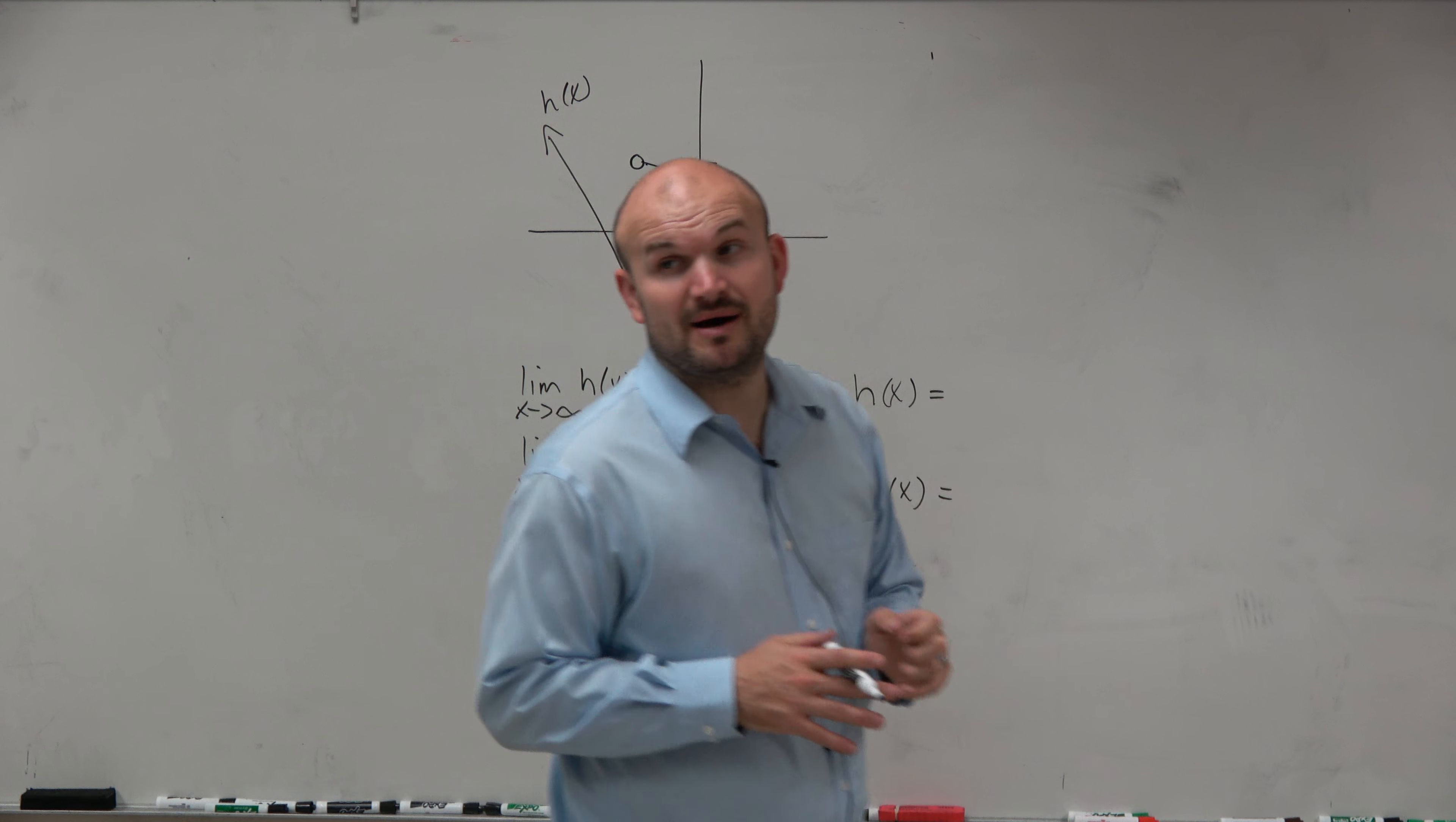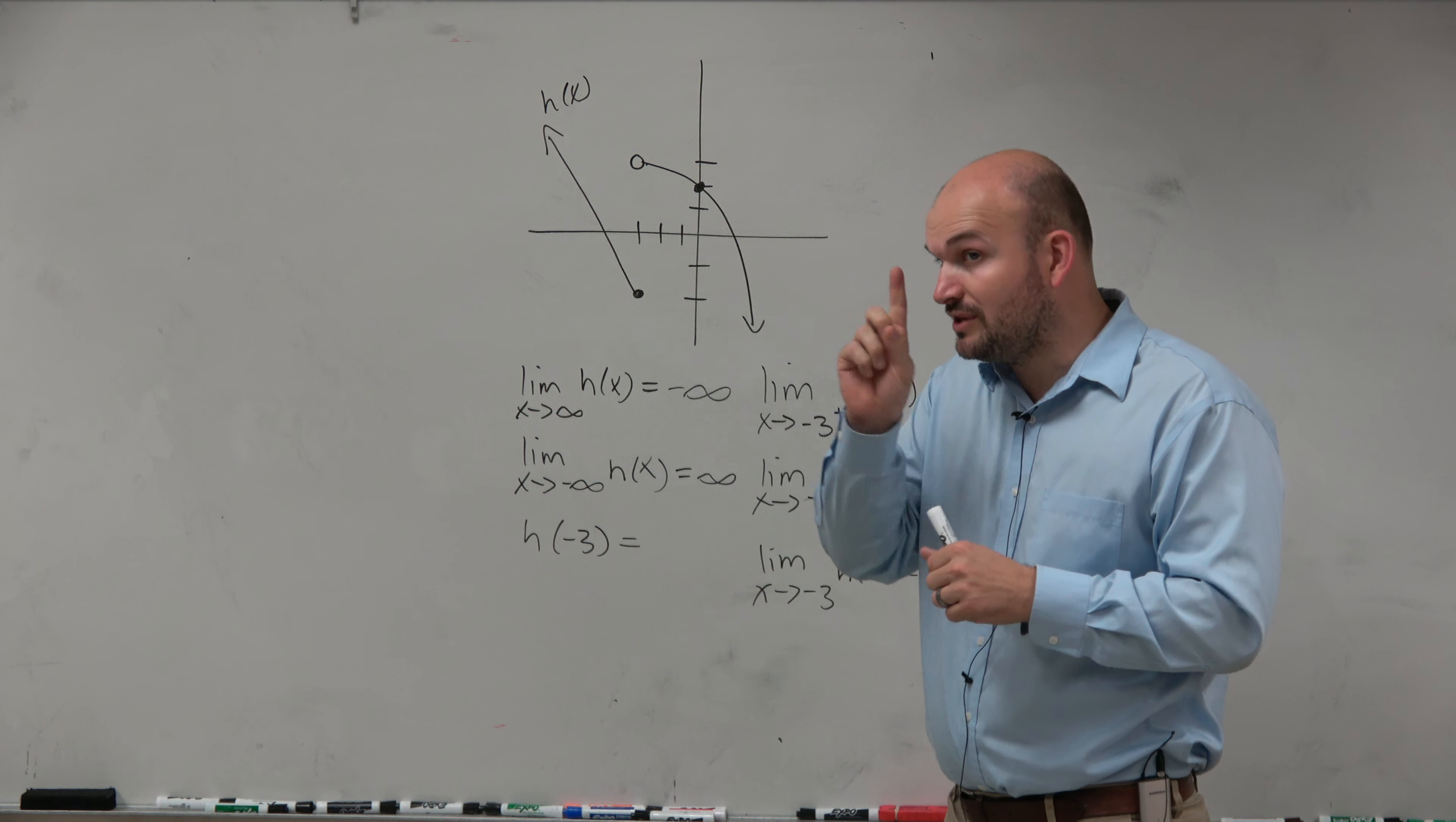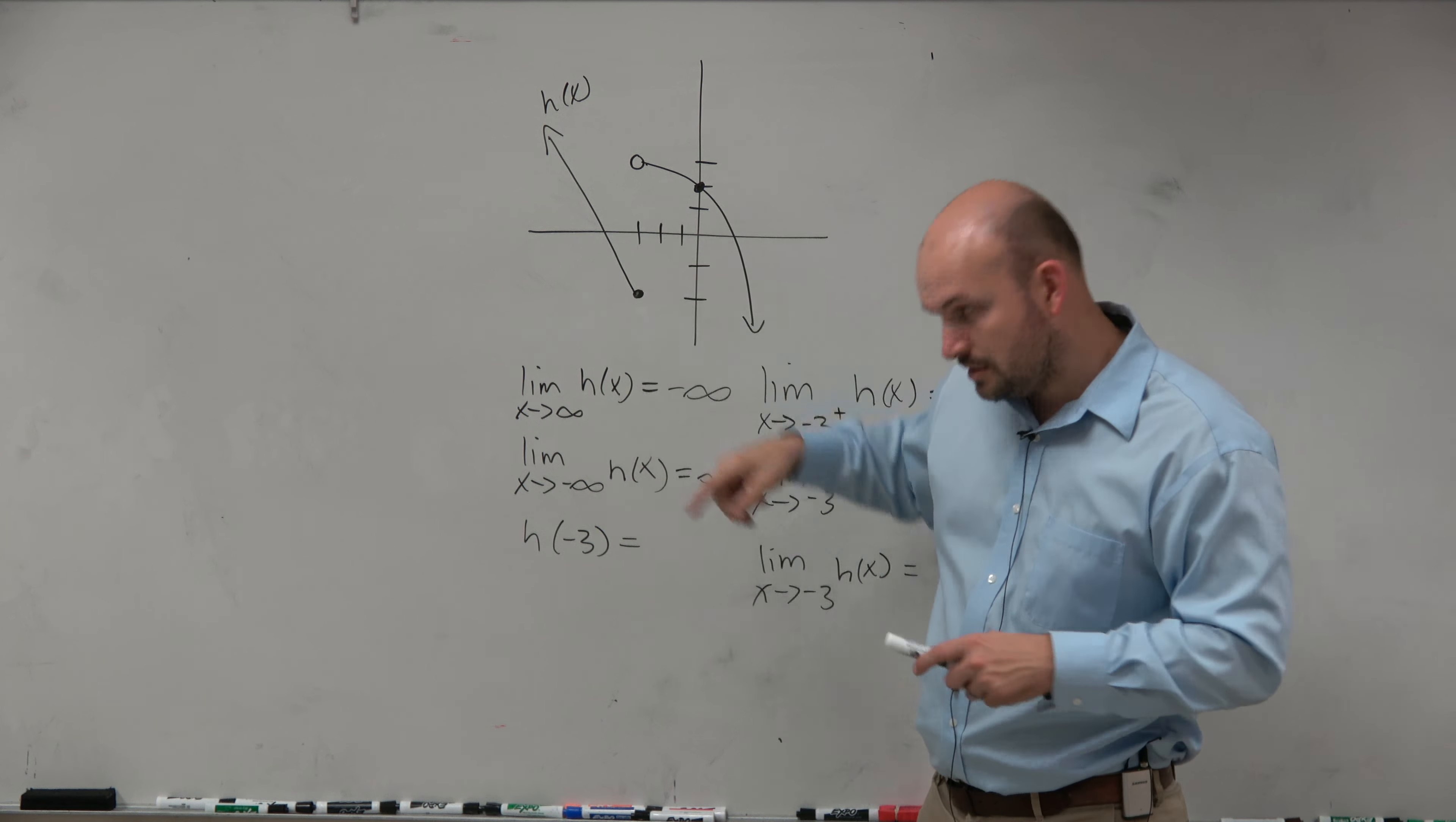h of negative 3. When we talked about piecewise functions, this was really important. And I remember going over this. The graph, if this is a function, a piecewise function, it can only equal one value. So we go to negative 3, right? So does negative 3 equal this value where there's a hole, or does it equal this value where there's a closed dot? The closed dot. So what is that value? Negative 2.